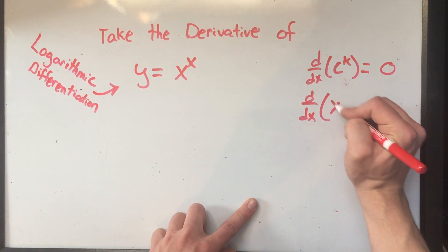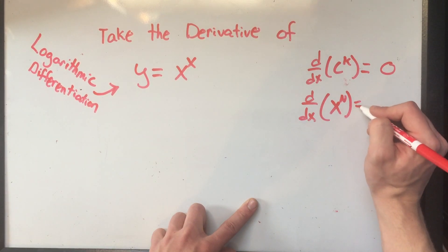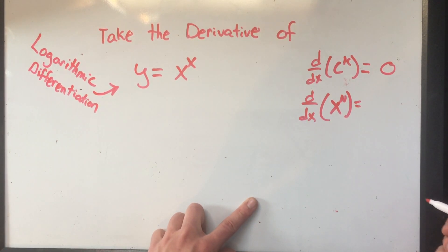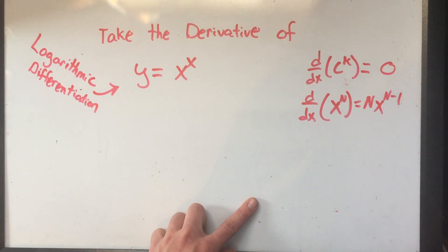You've also done variables to a constant. So like, something like x squared is 2x. You would just use the power rule, right? You write the power out front and then subtract 1 from the power.